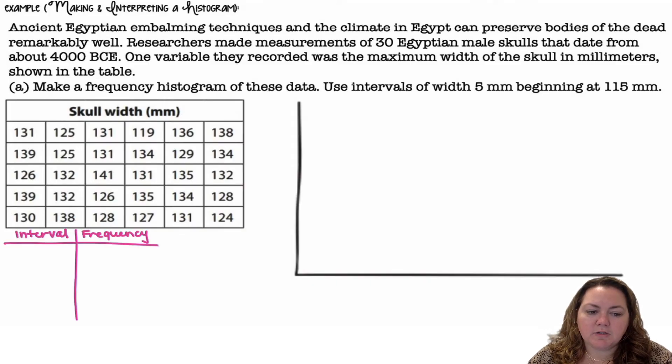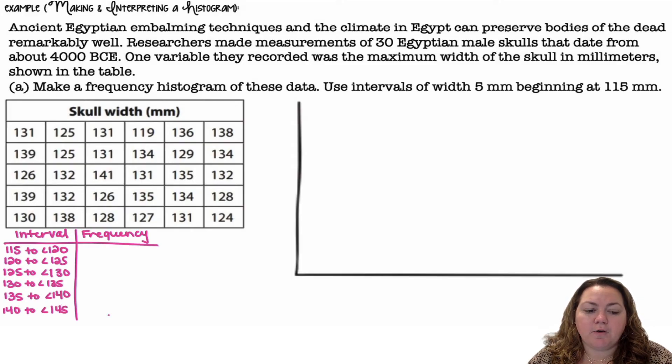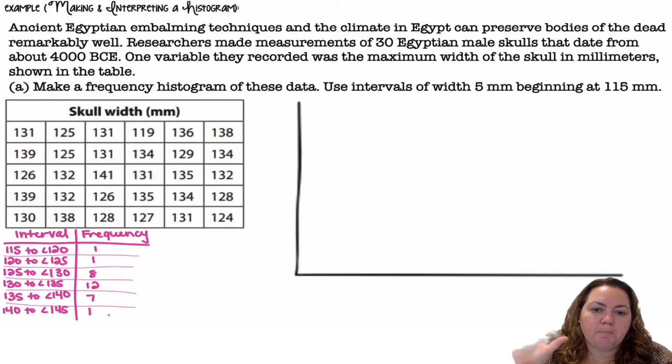I'm going to set up my intervals and then my frequencies. Starting at 115, I'm going to go 115 to less than 120, so 115 to 119.99999. Then 120 to less than 125, 125 to less than 130, 130 to less than 135, 135 to less than 140, 140 to less than 145. And then I'm going to count how many I have in each of those sections. So 115, 116, 117, 118, and 119 - in that bin of five, I have only one value.